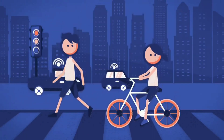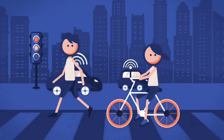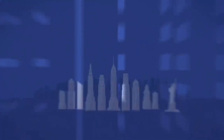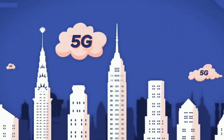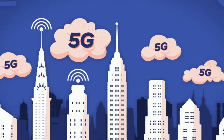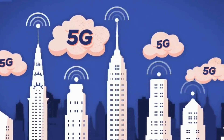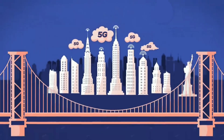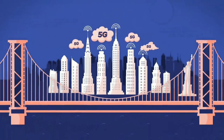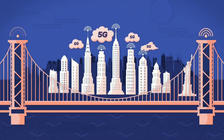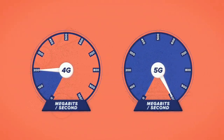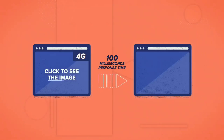Bandwidth is like the width of a highway — the broader the highway, the more lanes it can have, and more cars it can carry at the same time. This makes 5G much faster and able to handle many more devices.